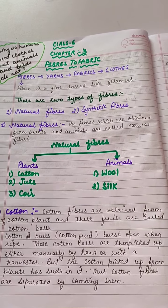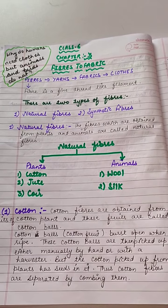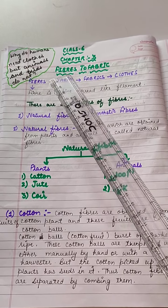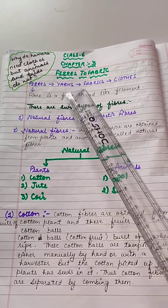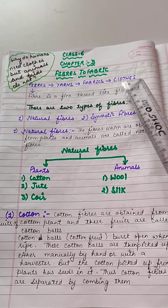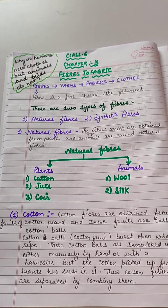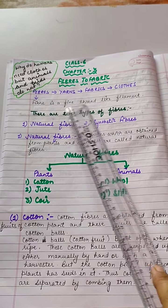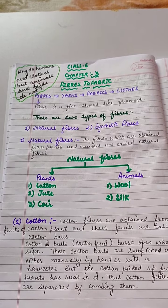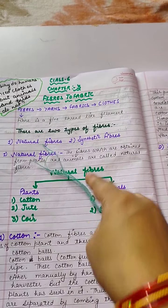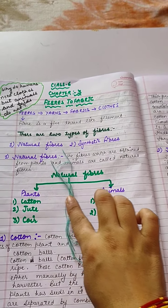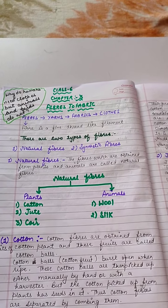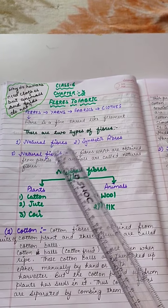So how do we get these clothes? Fibers are turned into yarns. These yarns are converted into fabrics, and from these fabrics several clothes are made. So first of all we have to understand what a fiber is. Fiber is a fine thread-like filament — it looks like a thread. These threads are called fibers. Fibers are of two types: natural fiber and synthetic fiber.